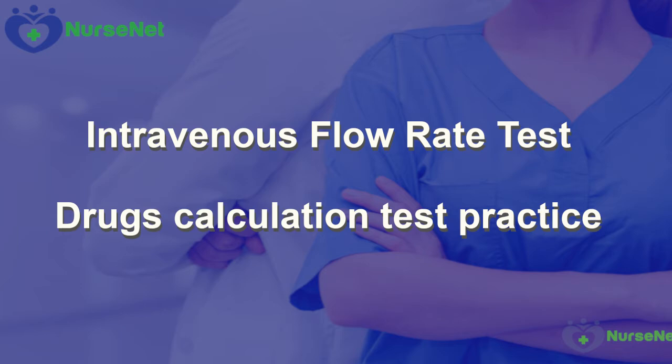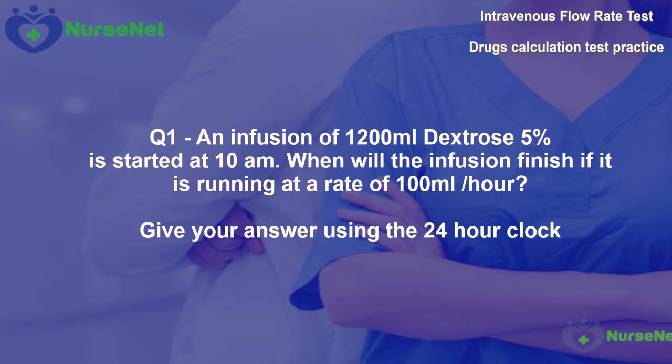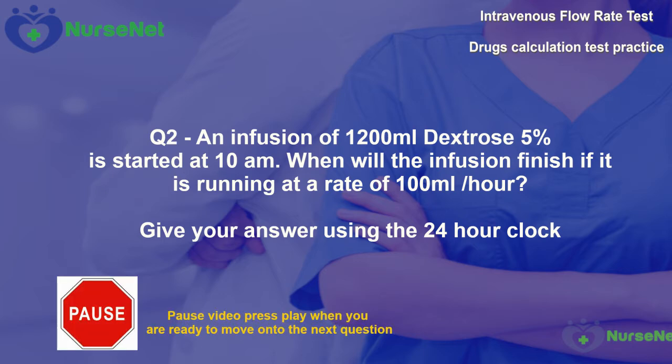Best of luck! Question 1. An infusion of 1200 millilitres dextrose 5% is started at 10am. When will the infusion finish if it's running at a rate of 100 millilitres per hour? Give your answer using the 24-hour clock.